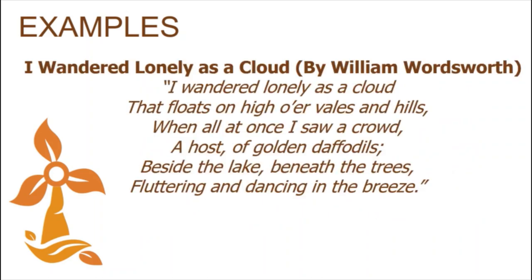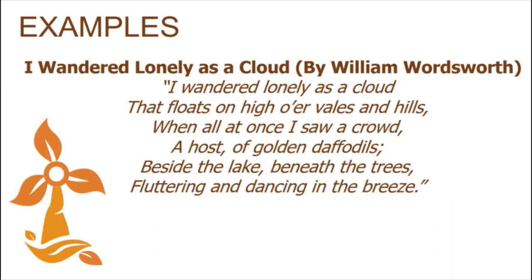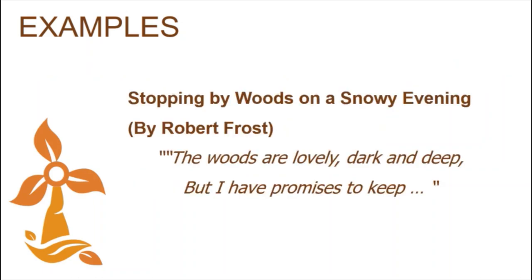I Wandered Lonely as a Cloud: 'I wandered lonely as a cloud that floats on high o'er vales and hills. When all at once I saw a crowd, a host of golden daffodils. Beside the lake, beneath the trees, fluttering and dancing in the breeze.' This is a very good example of imagery. The poet uses the sense of sight to create a host of golden daffodils beside the lake, and their fluttering and dancing also refers to the sense of sight. Stopping by Woods on a Snowy Evening: 'The woods are lovely, dark, and deep, but I have promises to keep.' Robert Frost uses visual imagery in these lines — the woods are lovely, dark, and deep.